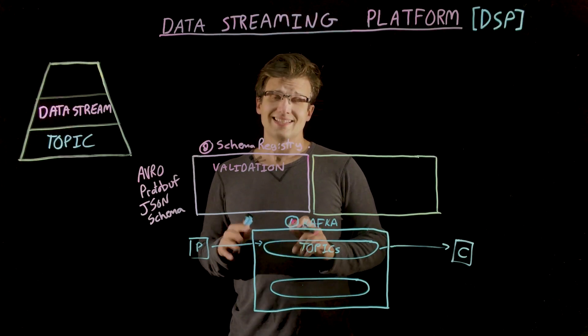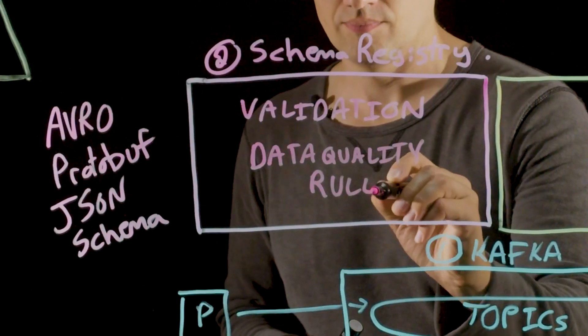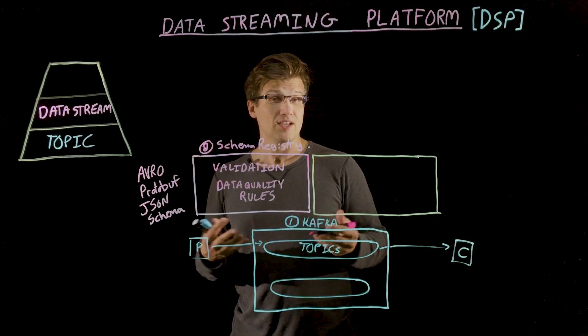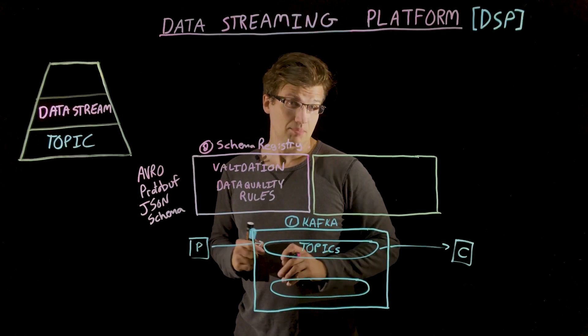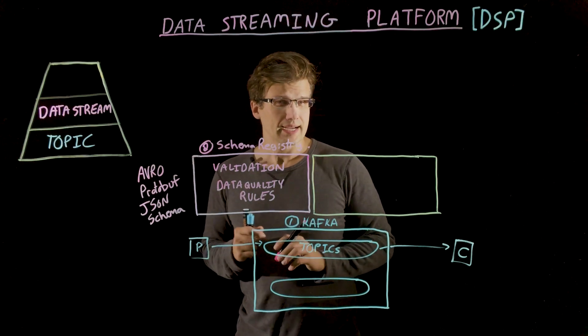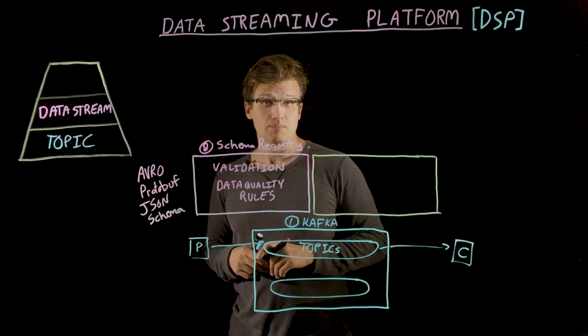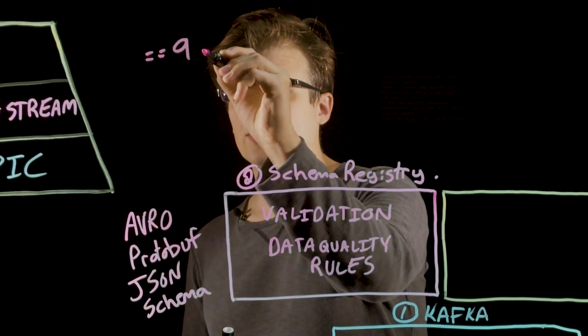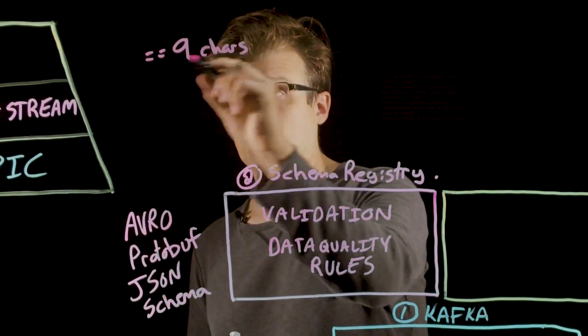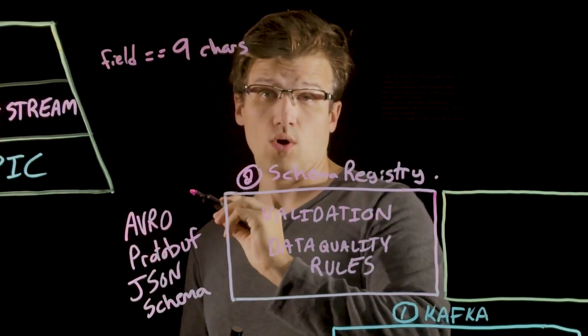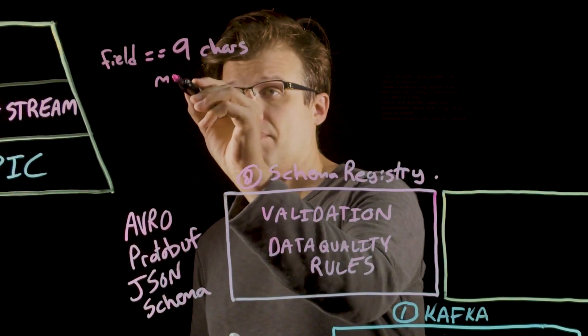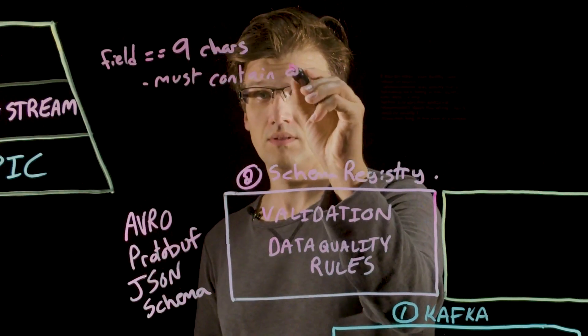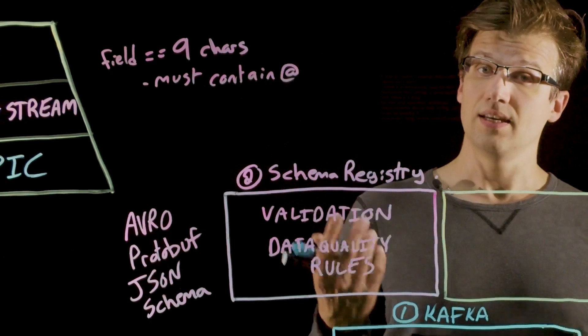It also provides data quality rules. While a schema may specify that a field must be a string, for example, a data quality rule can take it a step further and specify additional requirements about that string. For example, it must be exactly nine characters in length or perhaps it must contain an at symbol in the case of an email address.